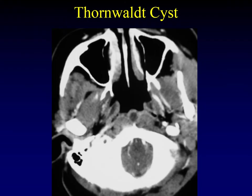A Tornwald cyst is an embryologic remnant that occurs at one end of Rathke's cleft. It appears as a rounded cystic mass in the nasopharynx, perfectly in the midline, snuggled up to the highest point in the nasopharynx right where you'd expect to see the fossa navicularis at the skull base. The Tornwald cyst is of no serious clinical consequence — it occasionally ruptures causing halitosis — but it might be mistaken for a nasopharyngeal carcinoma, so don't make that mistake.